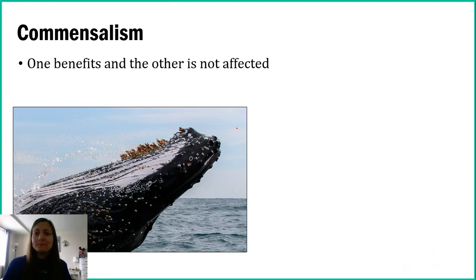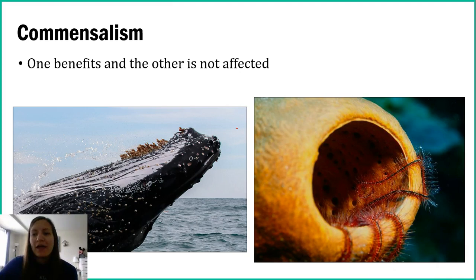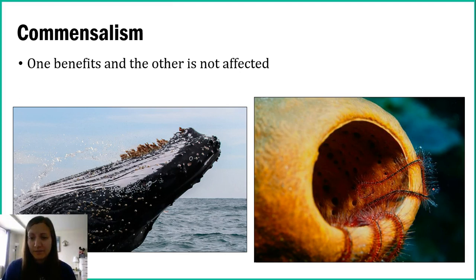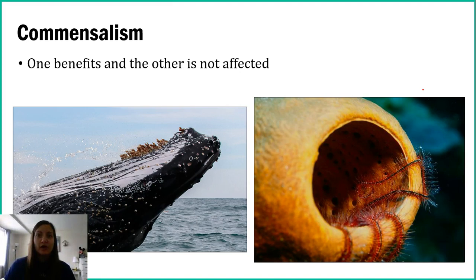Another example is this sponge — remember, sponges are animals. And here we have a brittle star, which is a type of sea star. In this case, the brittle star is just hanging out in the sponge, not eating it. More than likely, it's using the sponge as a hiding spot. The sponge is providing some sort of habitat for the brittle star, but the brittle star isn't harming it or giving the sponge anything. So the sponge is unaffected, while the brittle star is getting protection.